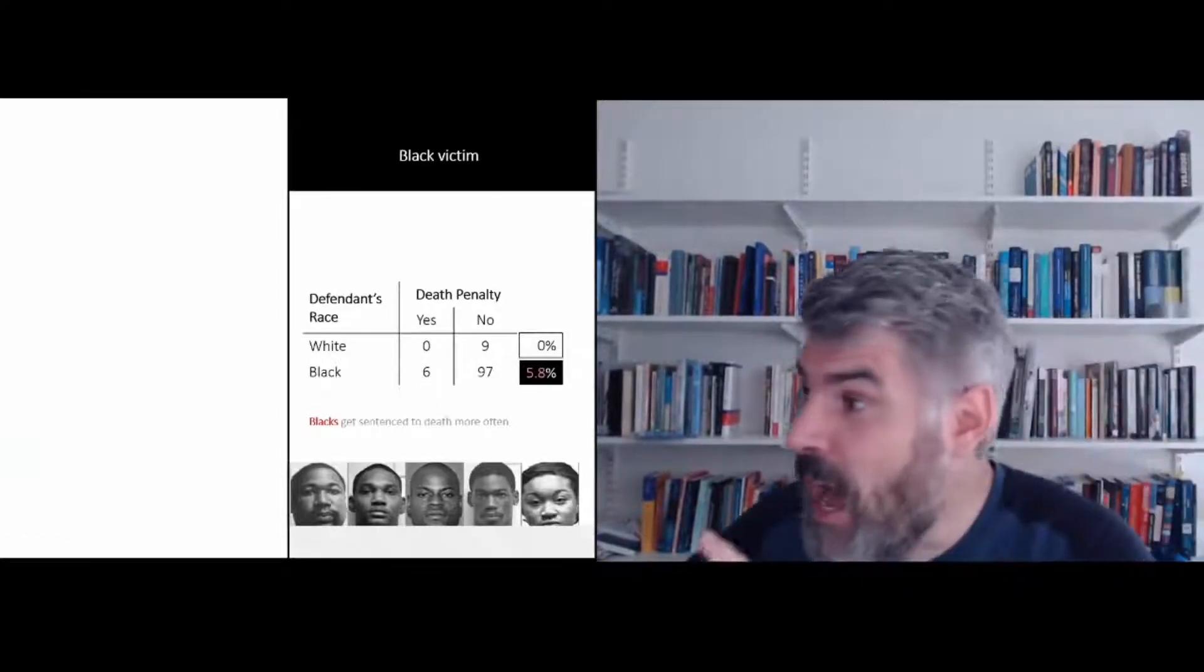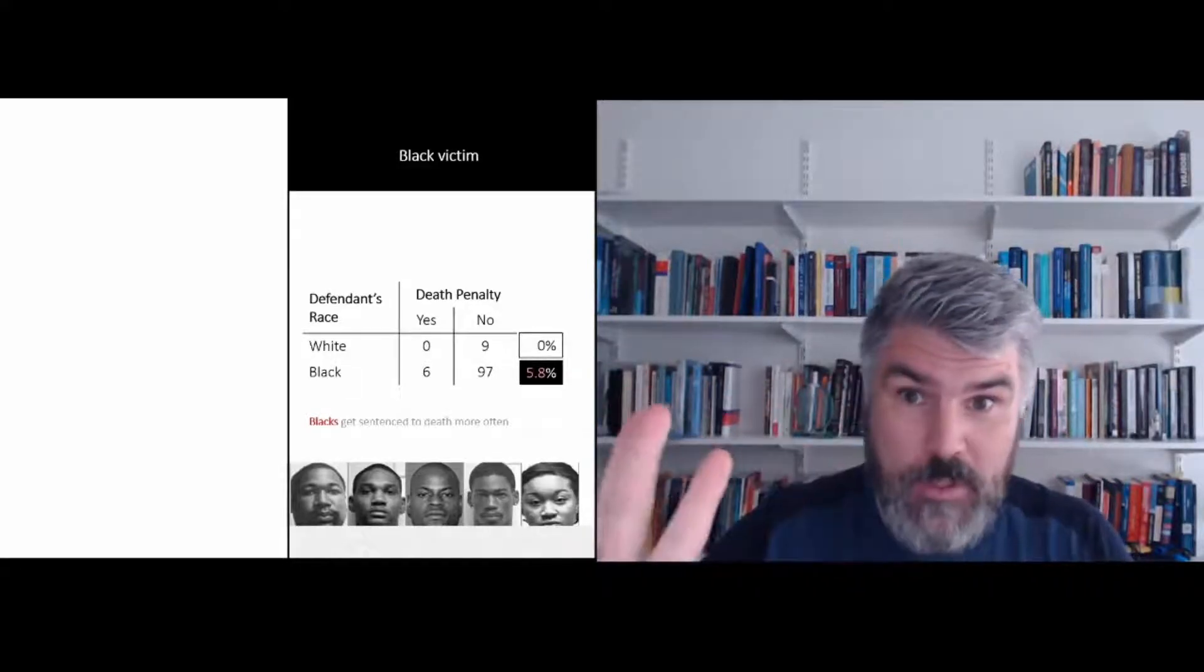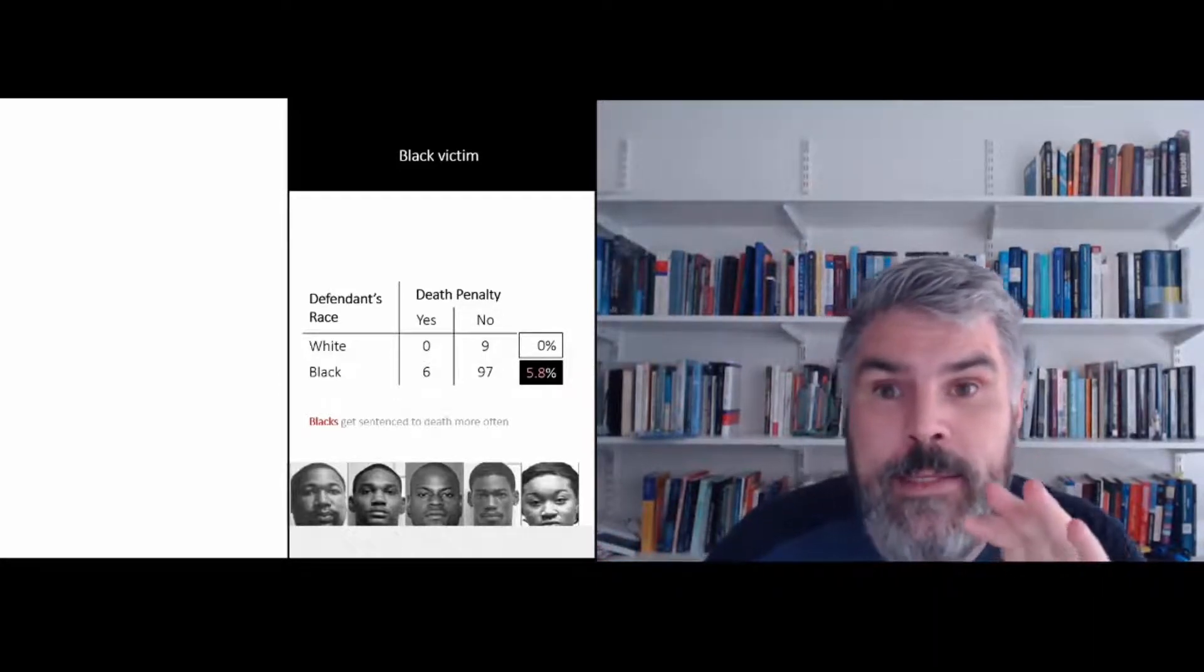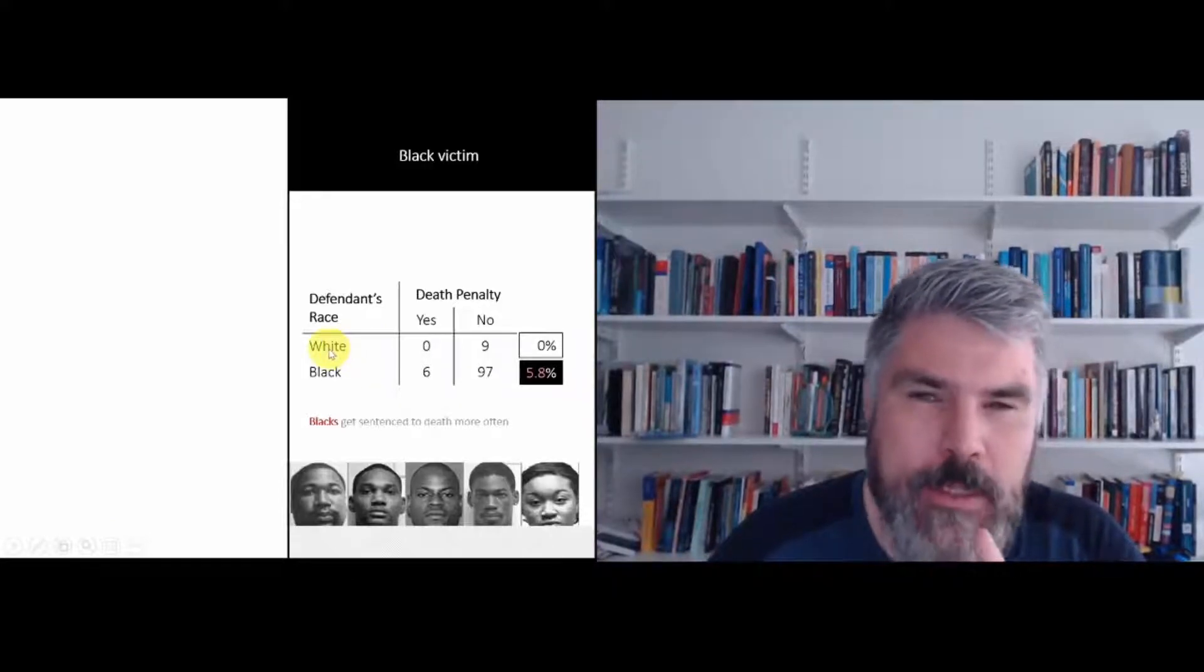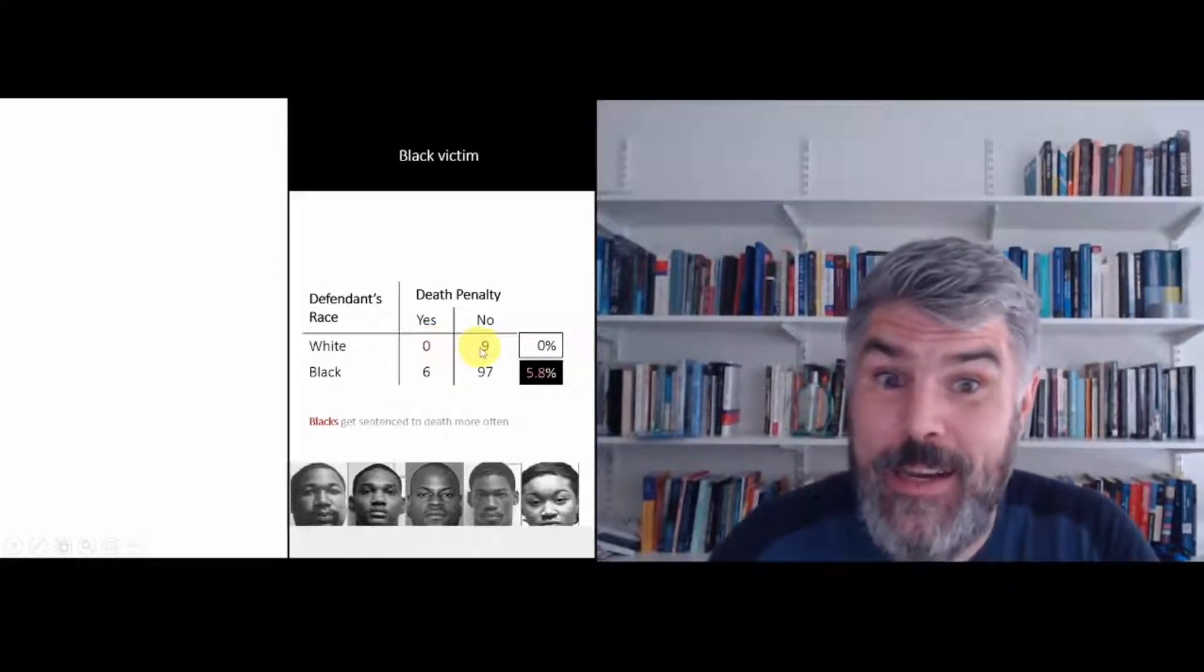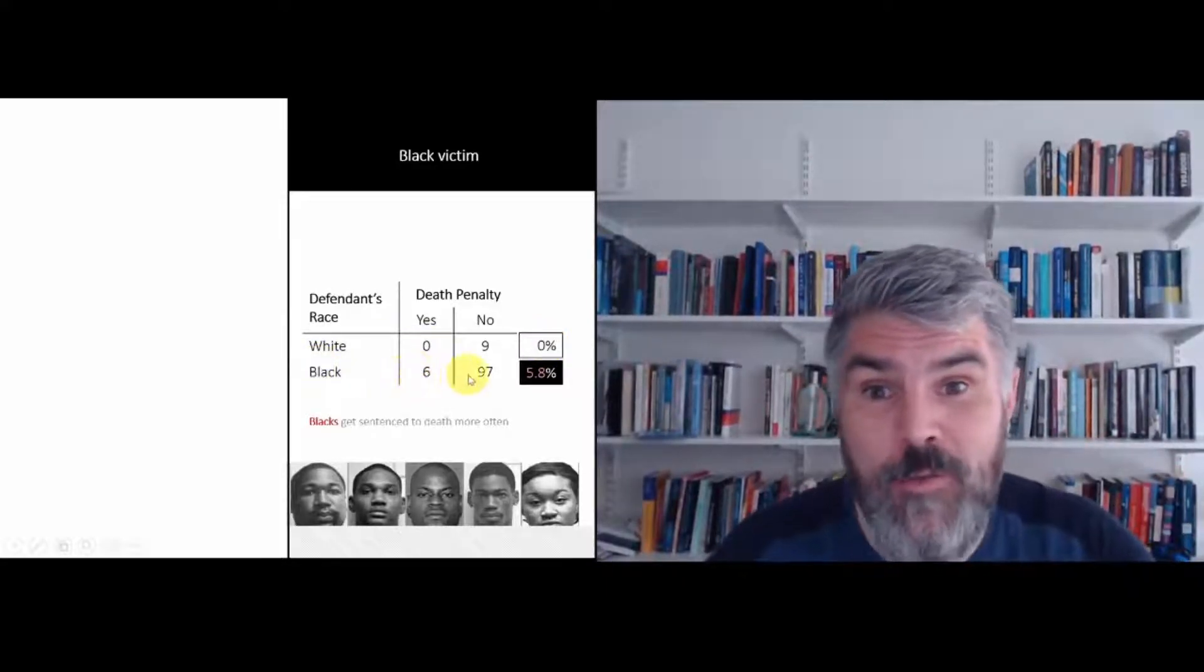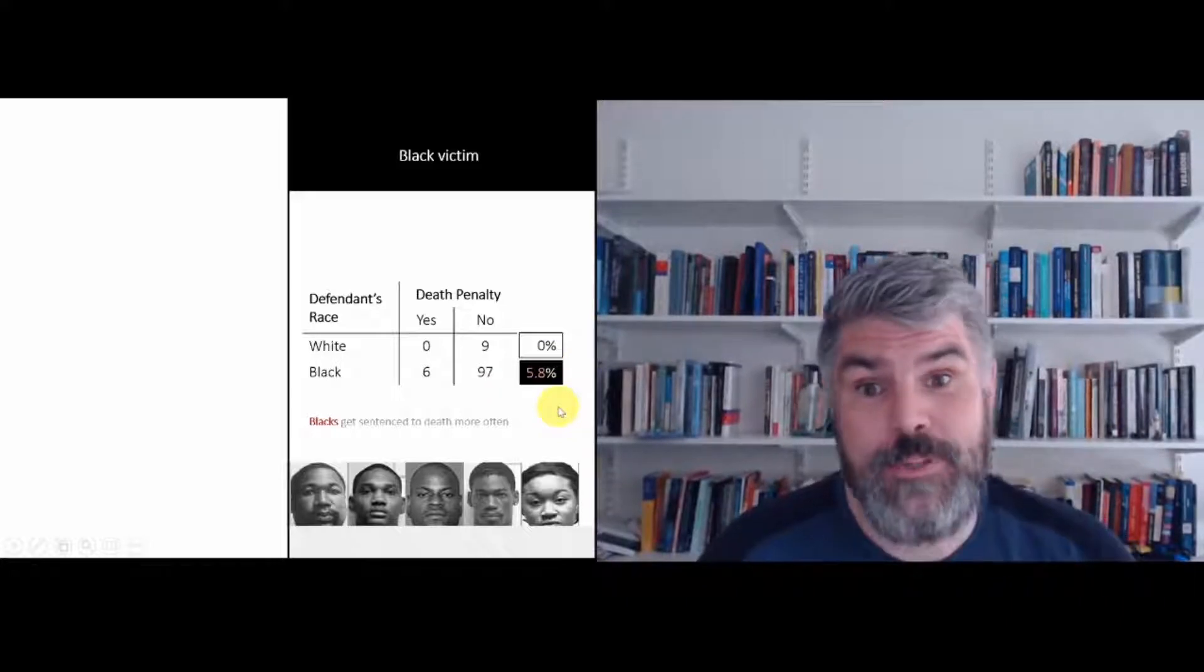The thing gets even more bizarre because now I'm looking at the cases where the victim is black. When we look at the cases where a white person killed a black victim, nobody got sentenced to death. But nine white offenders were not sentenced to death. So we have 0% of the whites who killed a black person got sentenced to death. But when we look at the black offenders, we have six out of 103 get sentenced to death. So we have 5.8% of the cases that get sentenced to death.